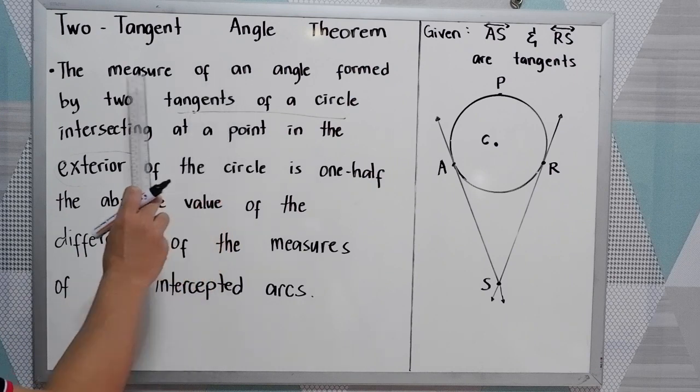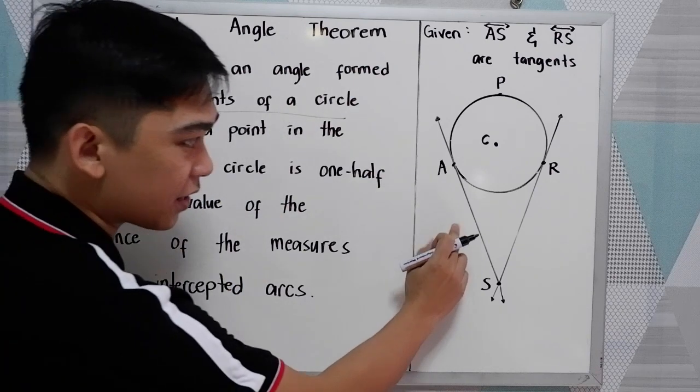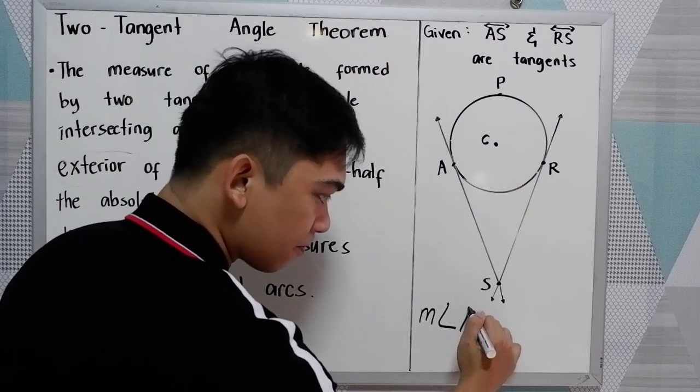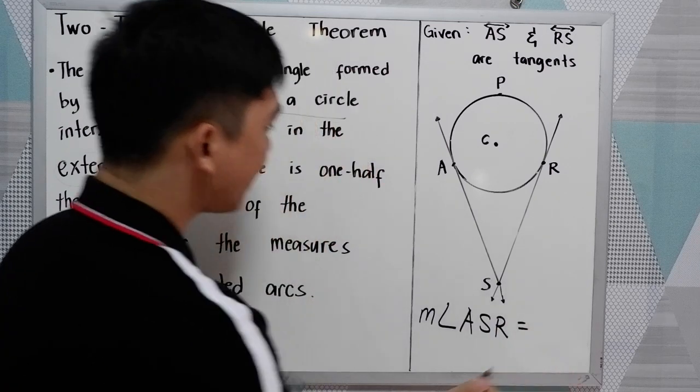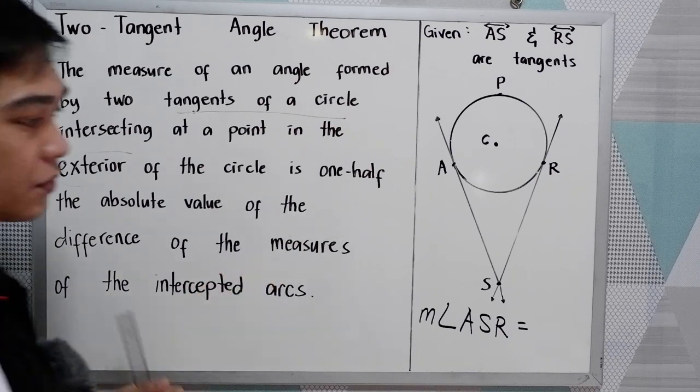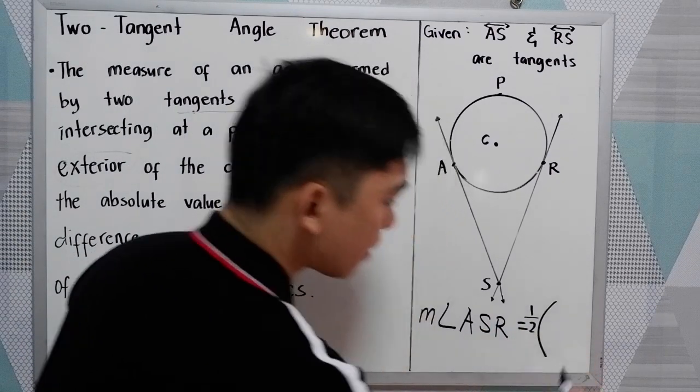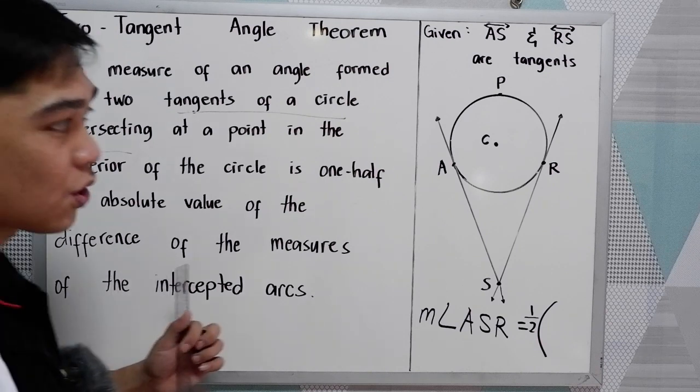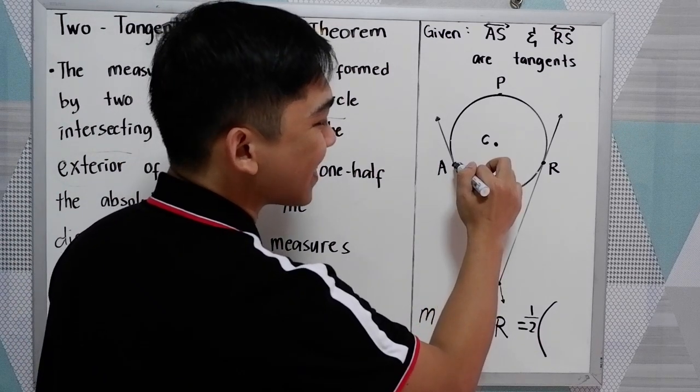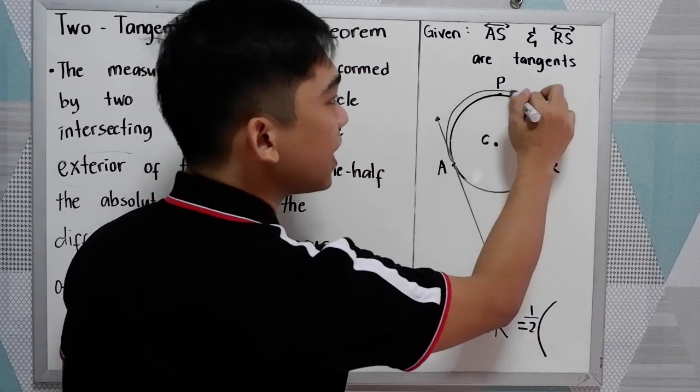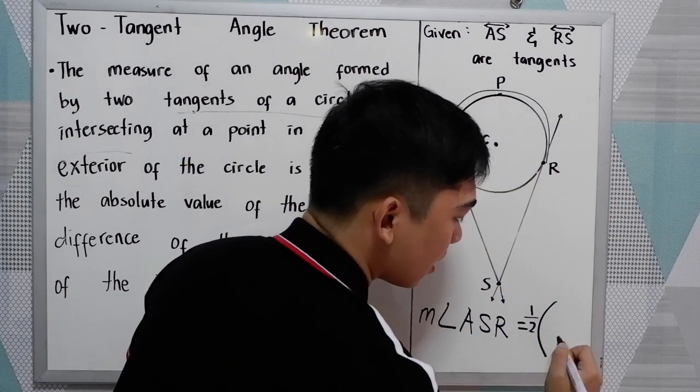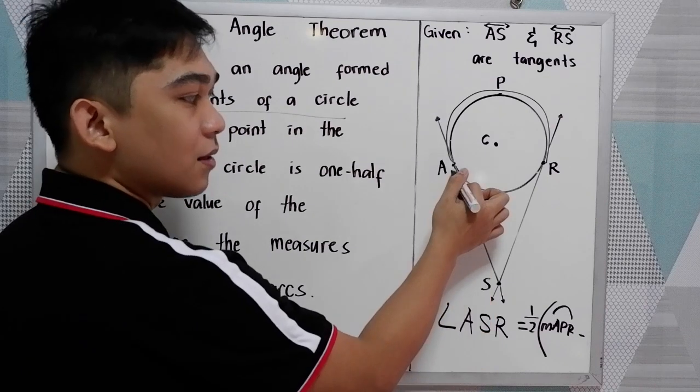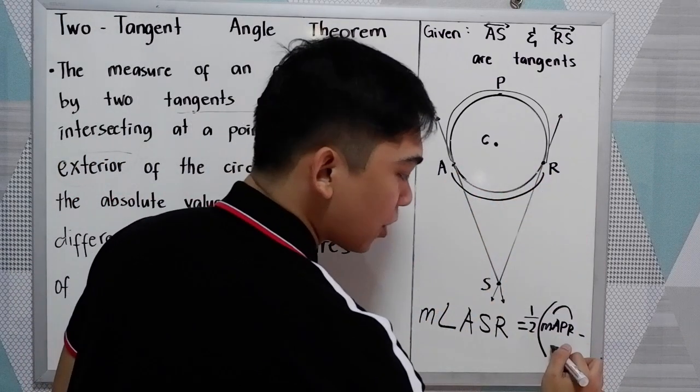In our theorem, the measure of the angle, here for our conclusion, the measure of angle ASR is one-half the absolute value of the difference of the measures of the intercepted arcs. So our intercepted arc is APR, so we have the measure of arc APR minus the measure of AR.